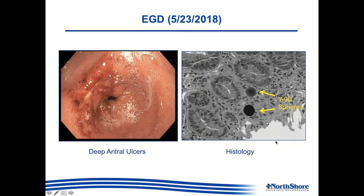Looking at the histopathology on the right of this slide, you can see effacement of the epithelium, and immediately deep to it are well-rounded, well-delineated spherical structures which were found to be consistent with Y-90 SIR-Spheres within the patient's antrum. It was thought that the patient had suffered these ulcers as a result of the misdirection of these Y-90 spheres during the radioembolization, subsequently resulting in ulcers of the gastric antrum.